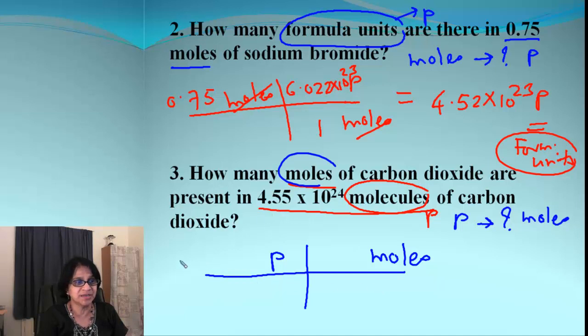Given particles go in the numerator on the top of the grid. That's 4.55 times 10 to the 24th. In order to cancel, particles should be diagonally across over here. Now it's the ratio of moles and particles. So mole is 1 and that's the magic number, Avogadro's number.